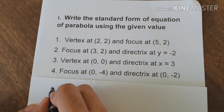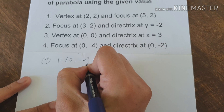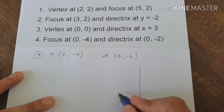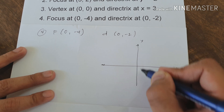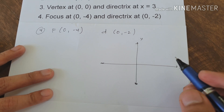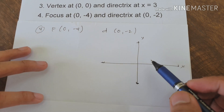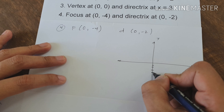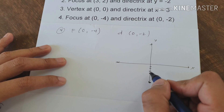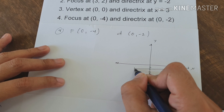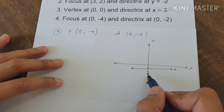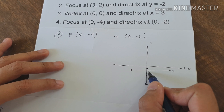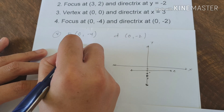For example number 4, we have focus at (0, negative 4) and directrix at y equals negative 2. Let us plot the focus and directrix. The focus is at (0, negative 4) and the directrix is the horizontal line y equals negative 2. It is very important to graph first to visualize the problem. The vertex is the midpoint between the directrix and focus, so the vertex is at (0, negative 3). The parabola opens downward because the focus is below the vertex.